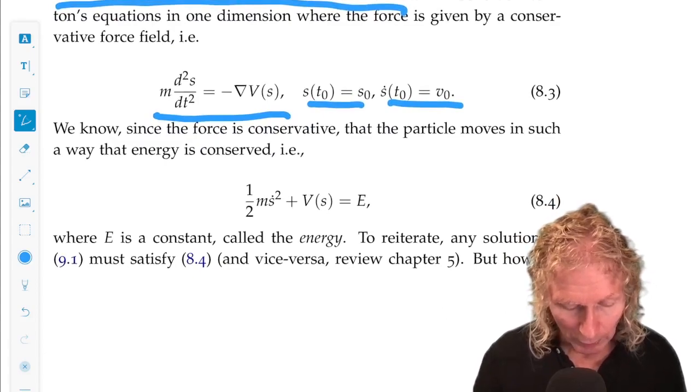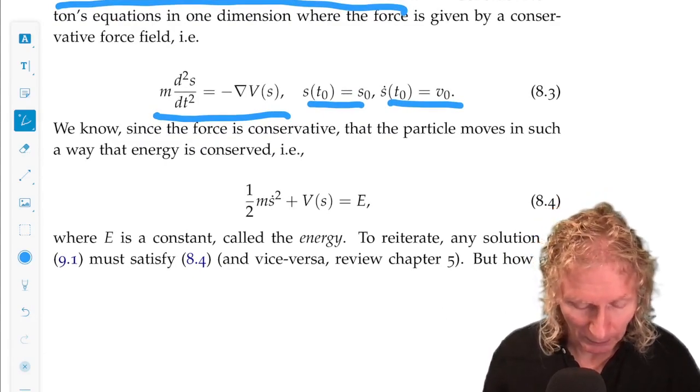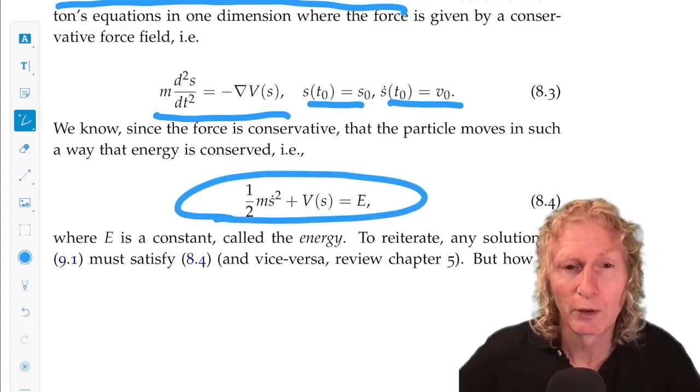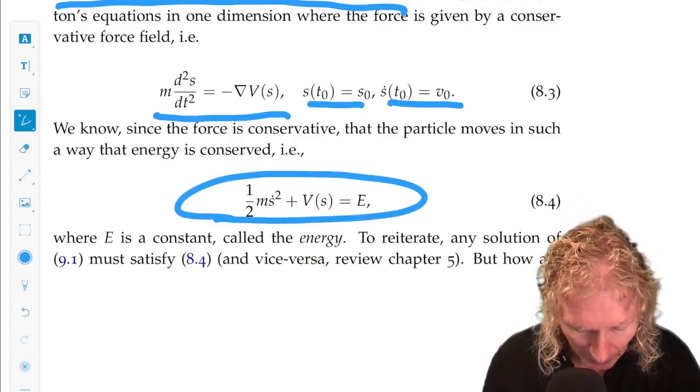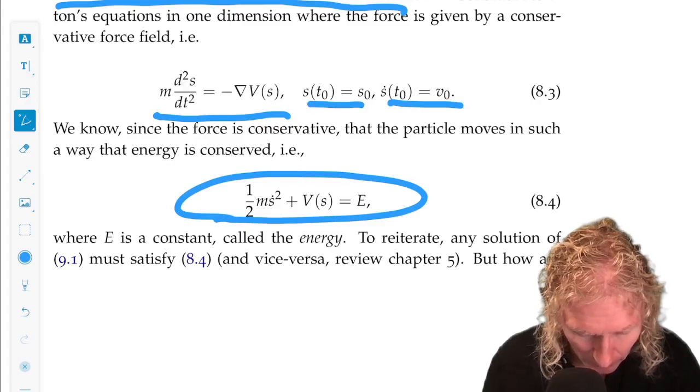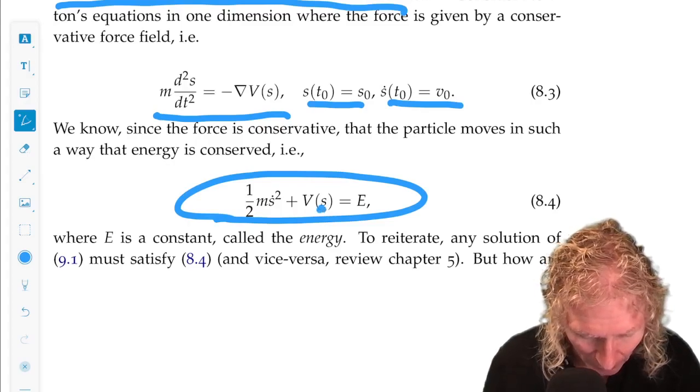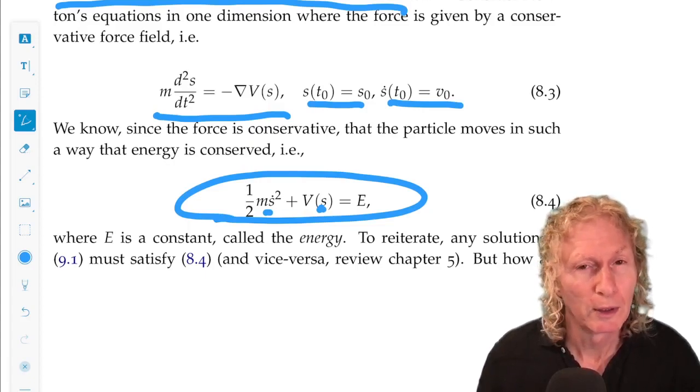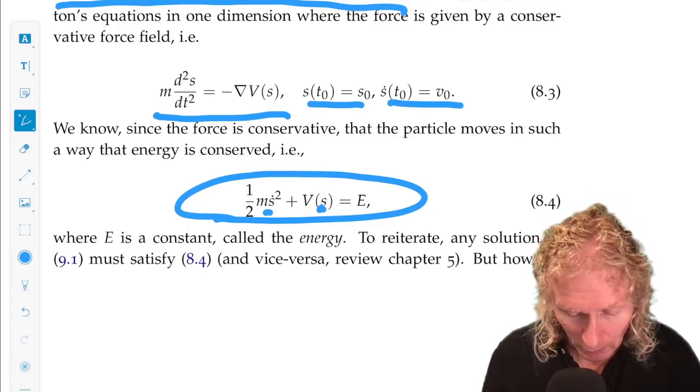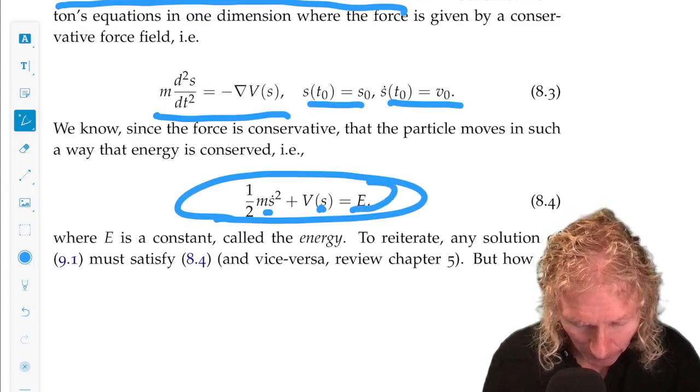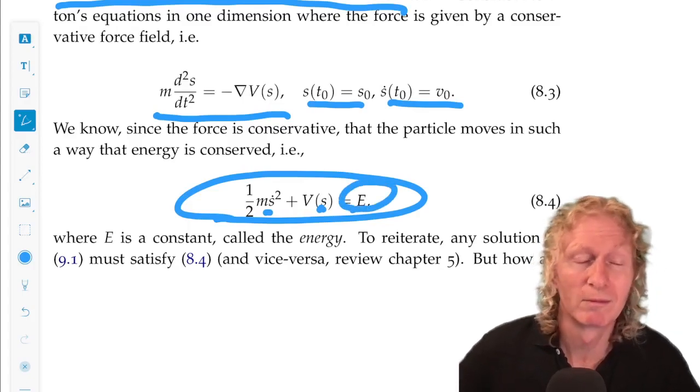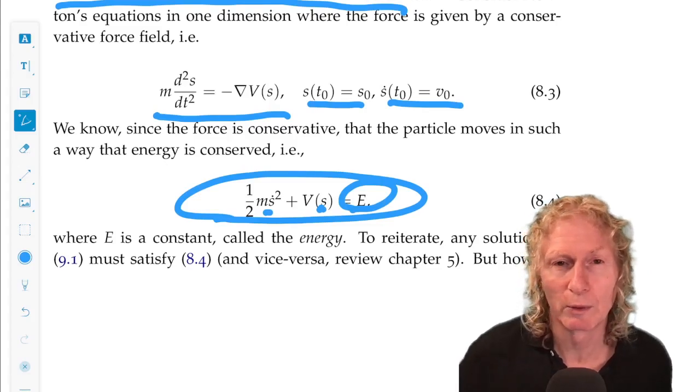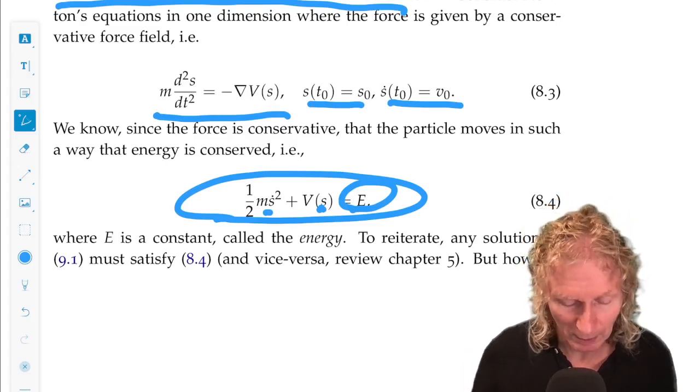We know that the particle moves in such a way so that energy is conserved. Wherever we're at, that is wherever value of s and s dot we have, this value of kinetic plus potential at that point is a constant. We're going to call that constant E. We refer to that as the energy when we understand that it's kinetic plus potential.